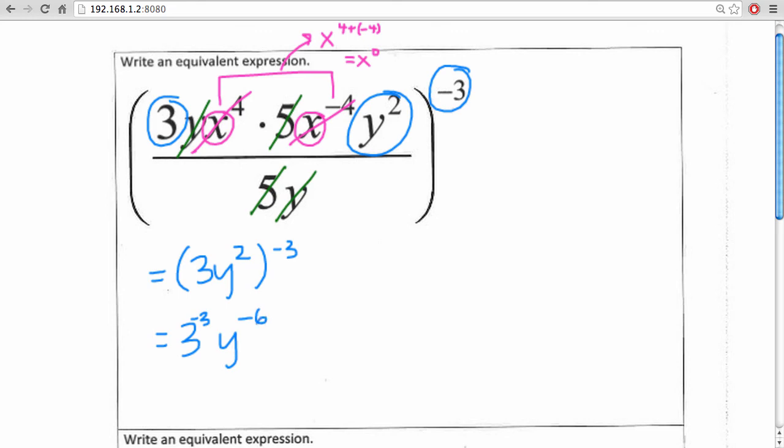Lastly, we know we can't have any negative powers, so we're going to reciprocate. And this becomes 3 to the third on the denominator, y to the sixth on the denominator, with 1 being on the numerator.